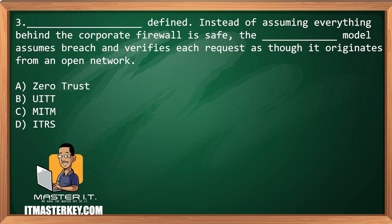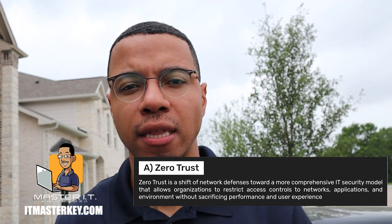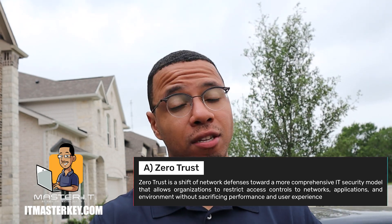Blank defined — instead of assuming everything behind the corporate firewall is safe, the blank model assumes there's a breach and verifies each request as though it originates from an open network. Zero Trust, UITT, MITM, ITRS. Zero Trust literally doesn't trust anybody or anything. It pretty much treats everything that's even behind the firewall as if it's somebody unknown.